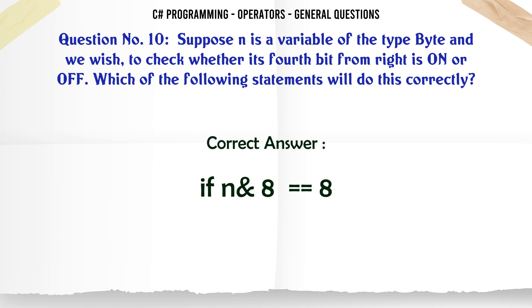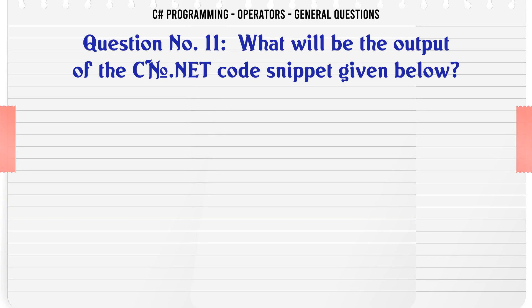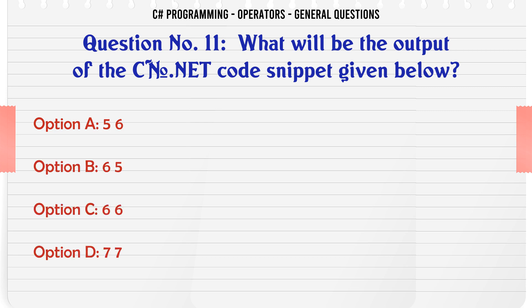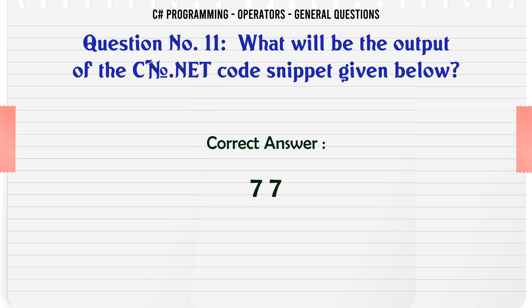What will be the output of the C.NET code snippet given below? A: 56. B: 65. C: 66. D: 77. The correct answer is 77.